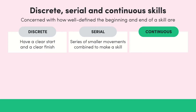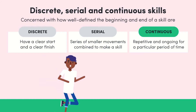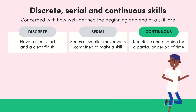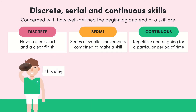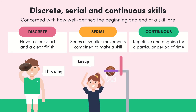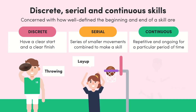Last but not least, we have continuous skills. Continuous skills are repetitive and ongoing for a particular period of time. Think of going for a run — you're just doing the same motions over and over again until you decide to stop. So remember: discrete has a clear beginning and end; serial involves a series of actions that make up the overall skill; and continuous is just a skill repeated over and over.